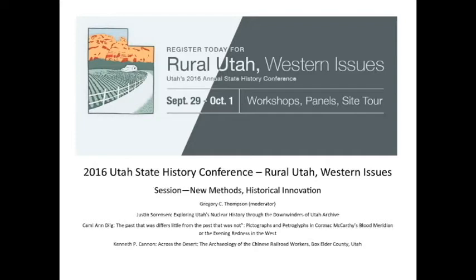The Downwinders of Utah archive has been created and designed to bring together information on Utah's nuclear history in a way that educates students, researchers, and the public about this dark time in our nation's history. Newer generations may be unaware of the devastation produced during this era, leading to the creation of this educational tool for understanding the topic in greater depth. The archive's focus on individuals, families, and areas impacted most aids in understanding the events in greater detail, while educating future generations in hopes that the mistakes of the past will never occur again.